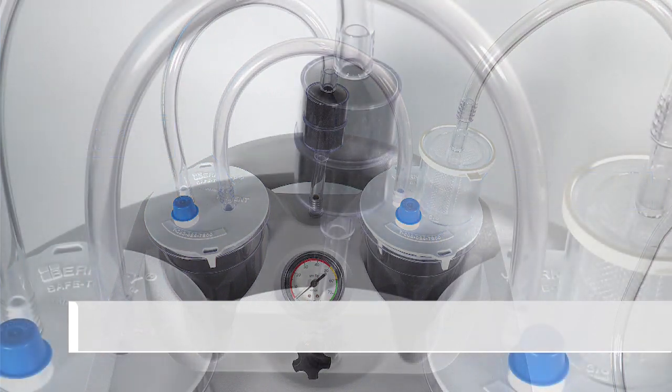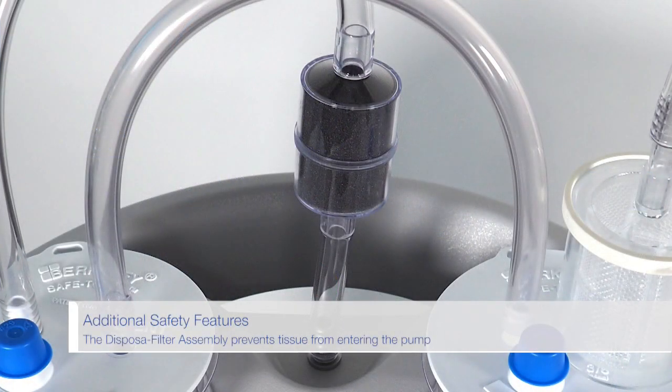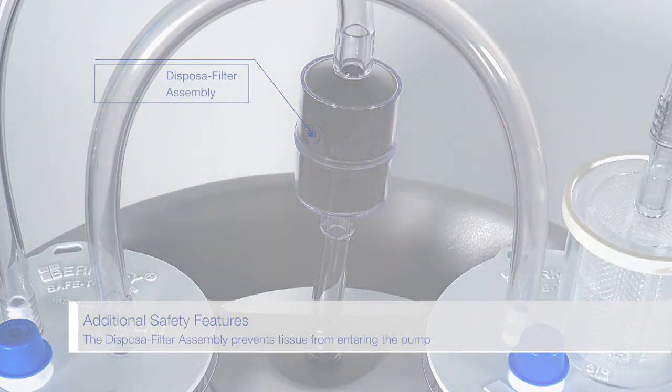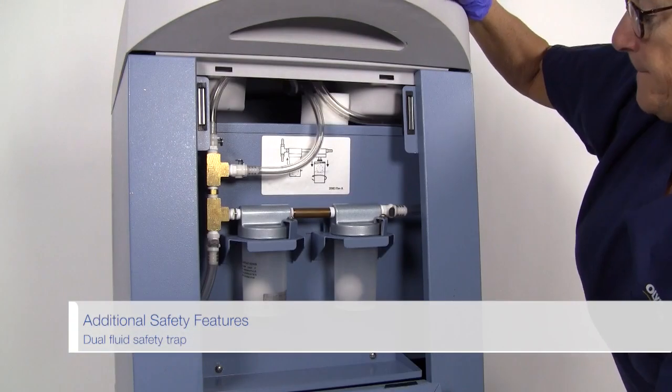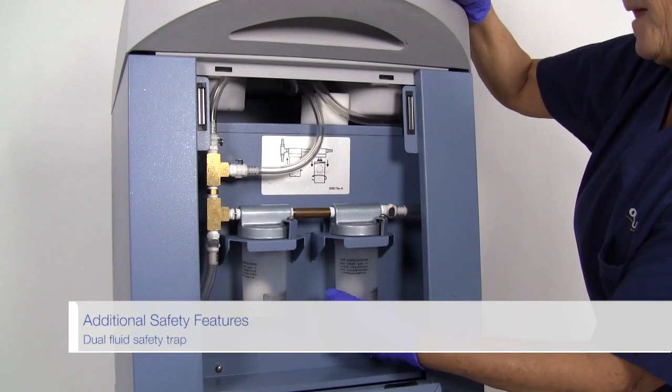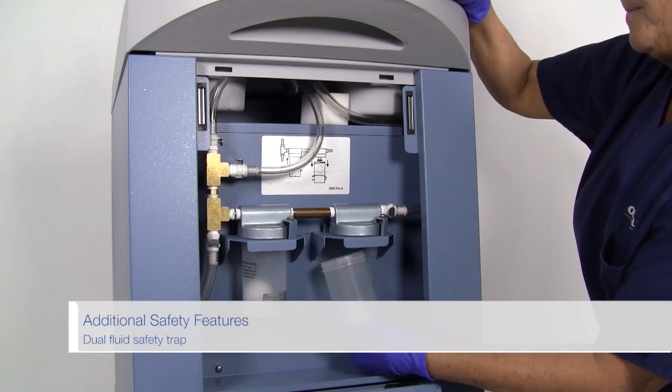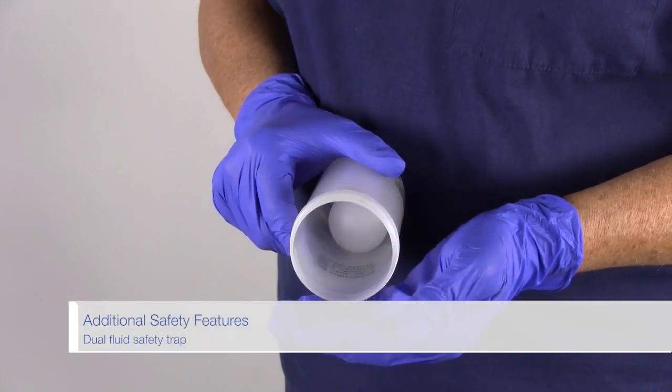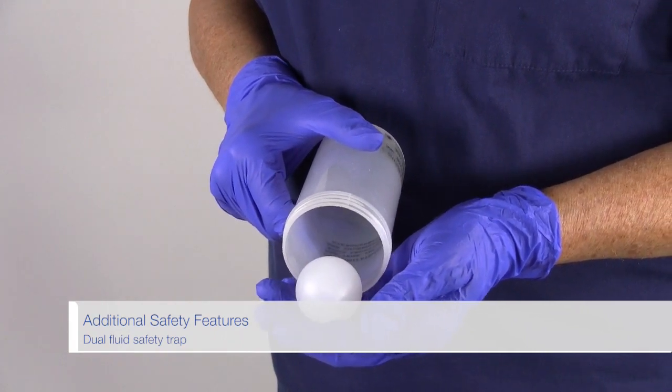There are two additional safety features built into the Berkeley VC10 system. The disposal filter assembly prevents tissue that was not captured by the trap from entering the pump motor. And the third is the dual fluid safety trap located behind the rear panel. If the trap fills with fluid, the ball rises and shuts off the motor preventing damage.